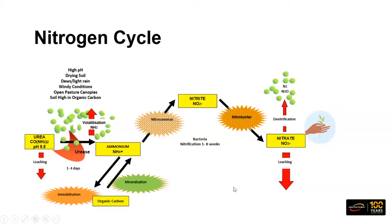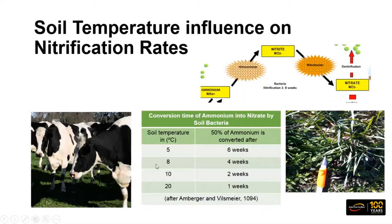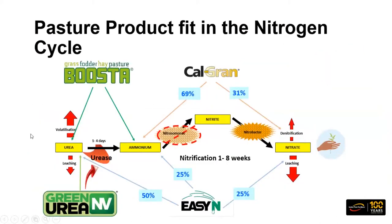If we take the ammonium-to-nitrate area of the cycle, the two things that influence the rate of nitrification are moisture and temperature. In cooler soil temperatures, the nitrification rate is much slower. If soil temperatures in the middle of winter are five to eight degrees, it can take four to six weeks for half of the applied urea or ammonium nitrogen to convert into nitrate nitrogen. In our choice of products, we can use different products to fit into different areas of that nitrogen chain.